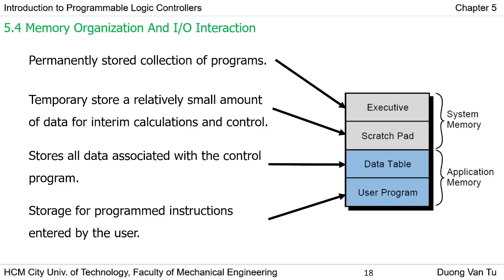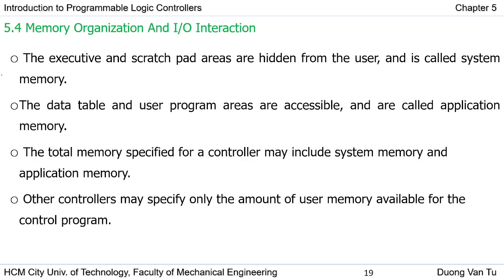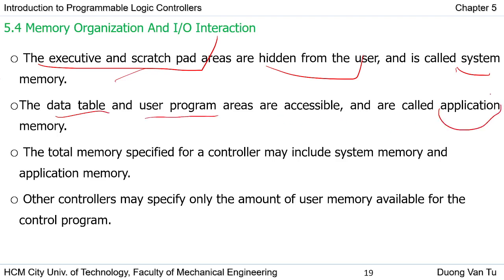Now we can see the memory organization and I/O interaction. The overall memory in the PLC contains the system memory and application memory, divided into four areas: executive, scratch, data table, and user program. The user program stores the control program prepared by the programmer, and the data table contains user data. The executive and scratch areas are hidden from the user, used by the manufacturer — these form the system memory. The data table and user program are accessible to the user and form the application memory.